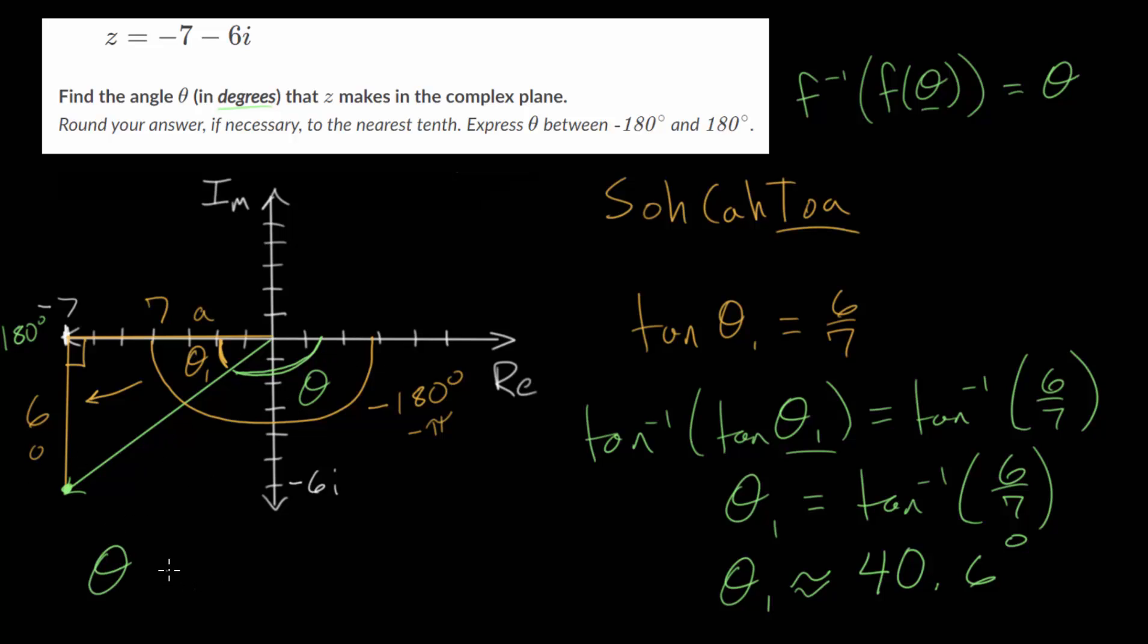Theta would just be minus 180 plus 40.6 degrees. We should be careful, this is really an approximation, since this is a rounded answer. This should simplify. If we add 40 to minus 180, that brings us to minus 140. And adding 0.6 more brings us to minus 139.4 degrees.